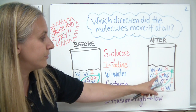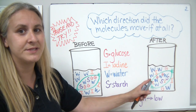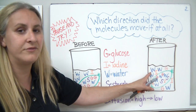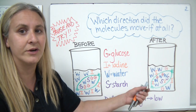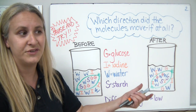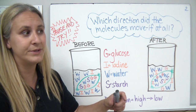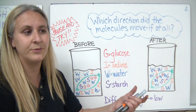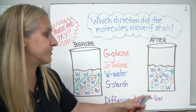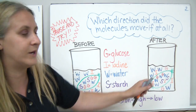We also noticed that glucose moved out of the baggie into the solution. We weren't actually able to see this — we had to do a test using Benedict solution. We took a sample of the water in the beaker, added our Benedict solution, and heated it in a test tube to see if it changed colors. If it changed from blue to any other color — typically orange, yellow, or reddish — that showed we had glucose in our solution. So the glucose moved from inside the bag out to the solution.